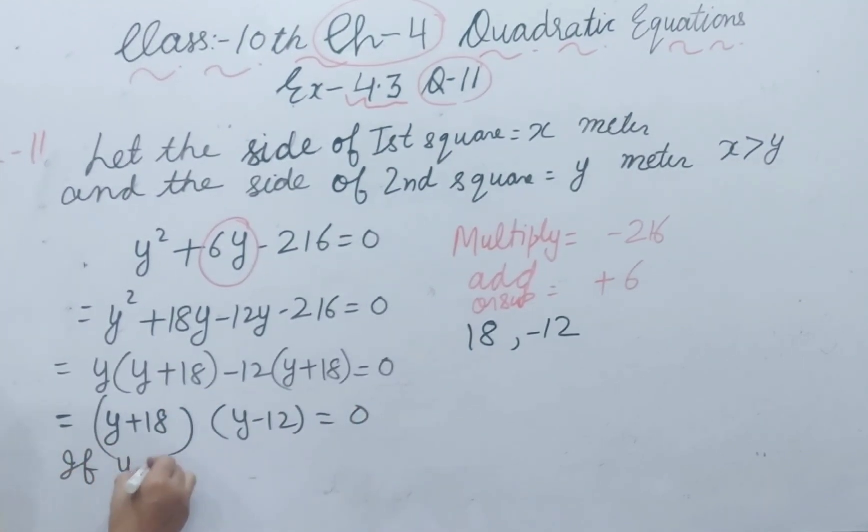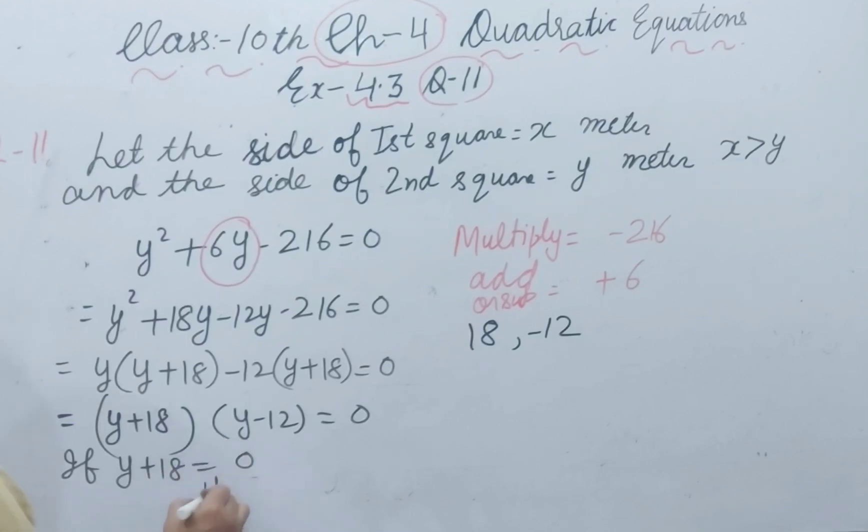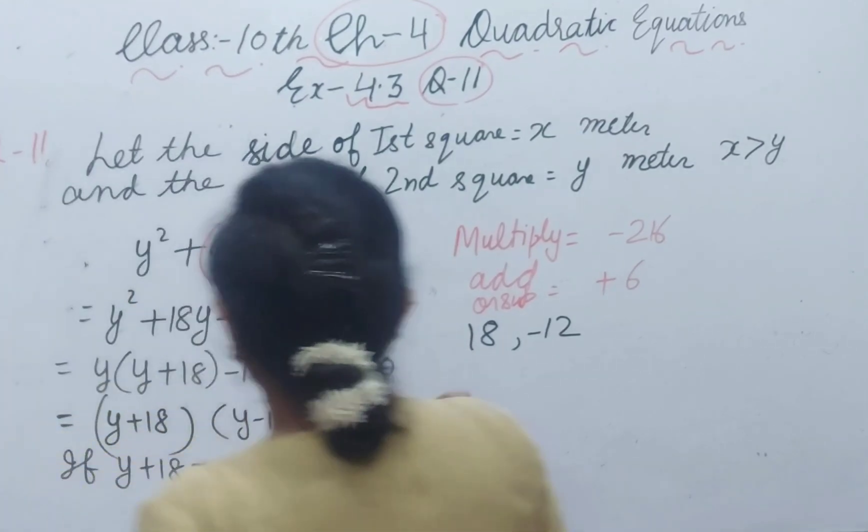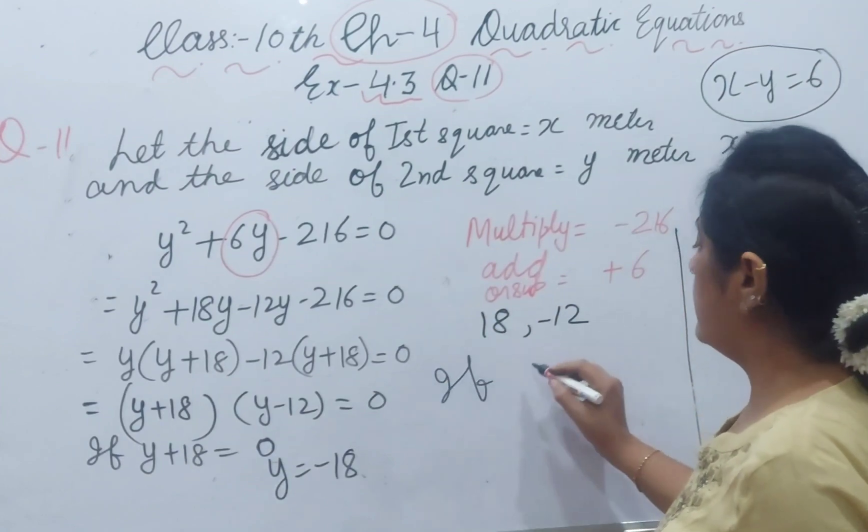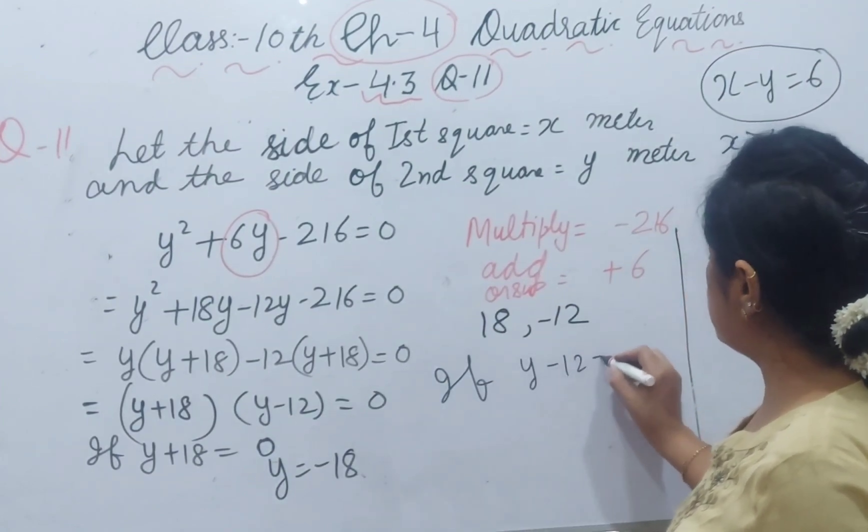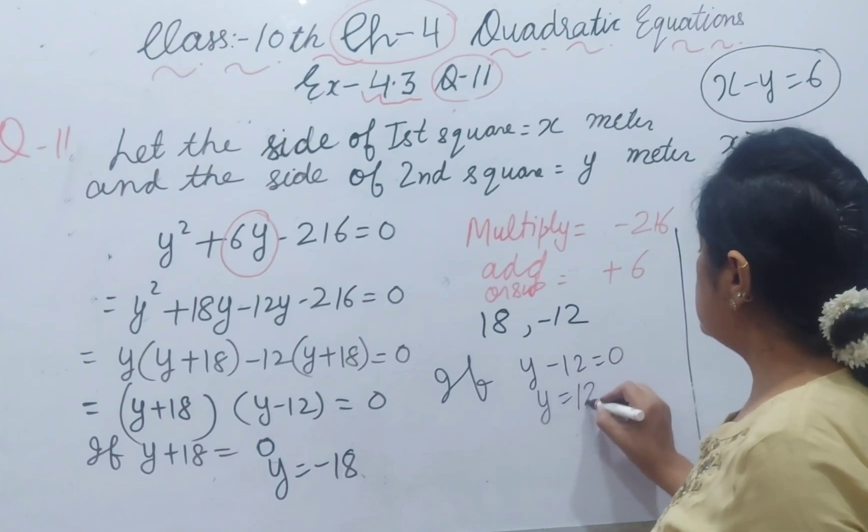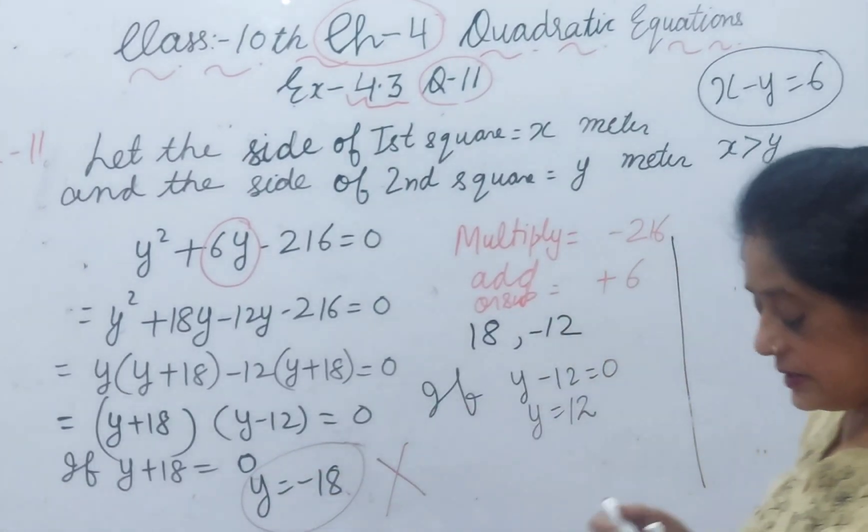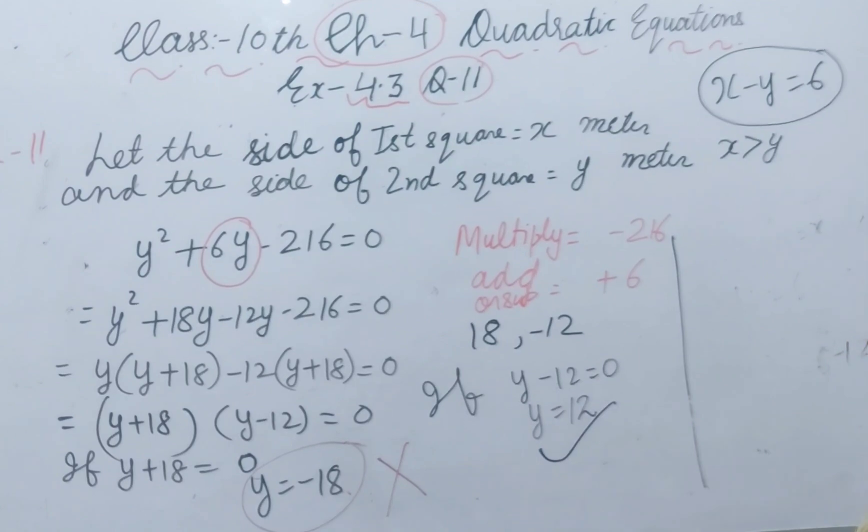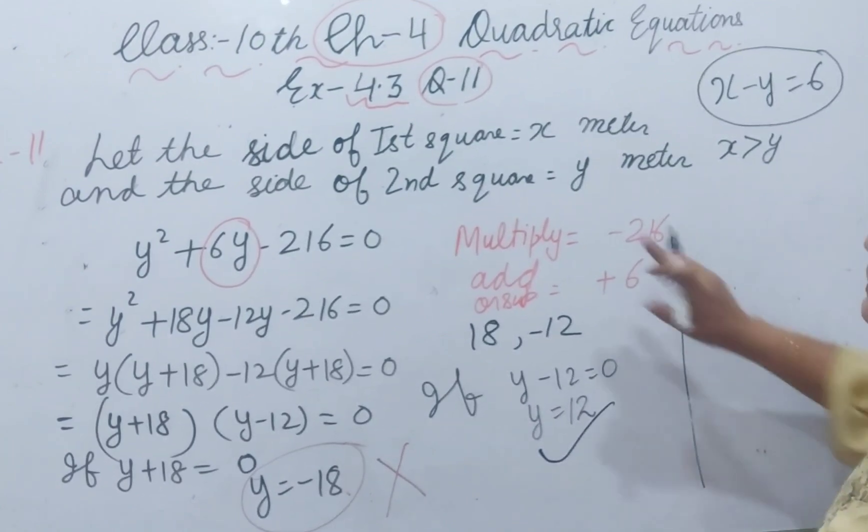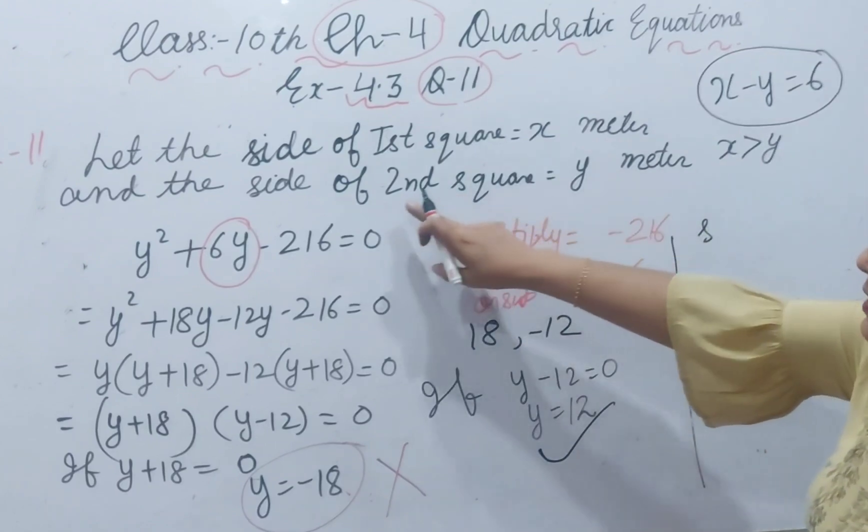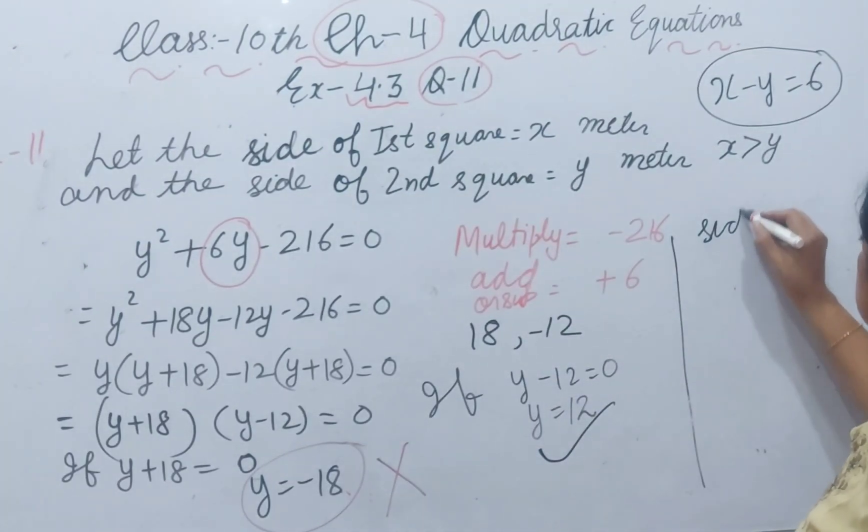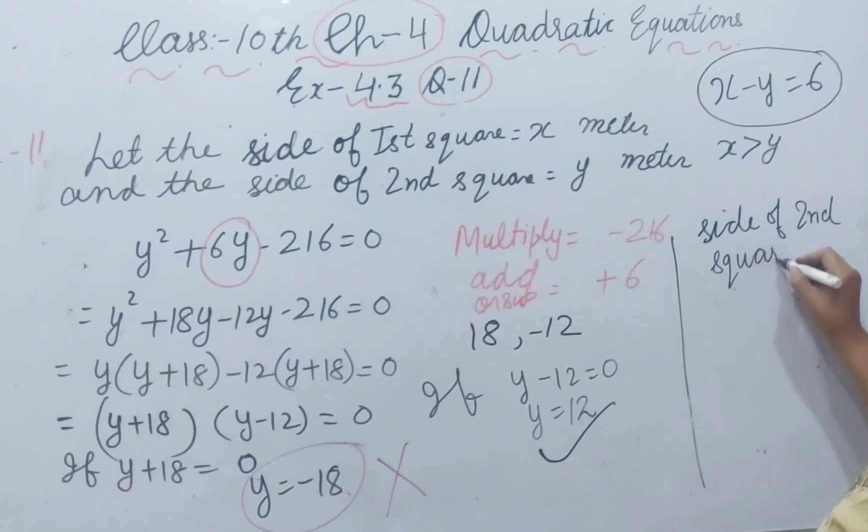If y plus 18 equal to 0, y is equal to minus 18. Y minus 12 equal to 0, y value is 12. Square of side cannot be negative, so we will ignore this value. And we will take y equal to 12. Side of second square is 12 meter.